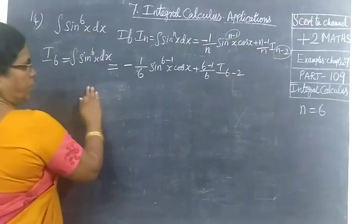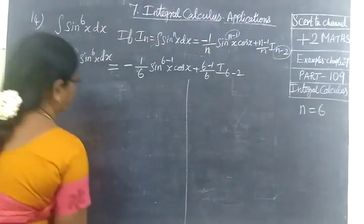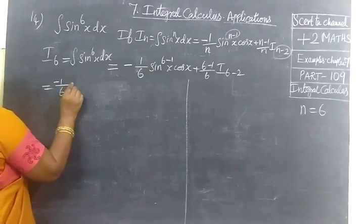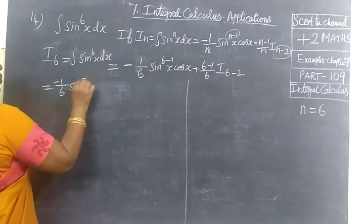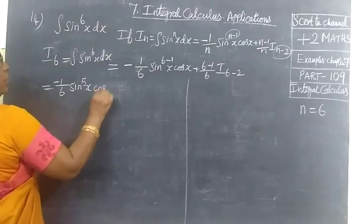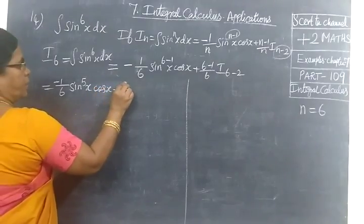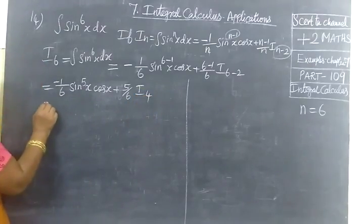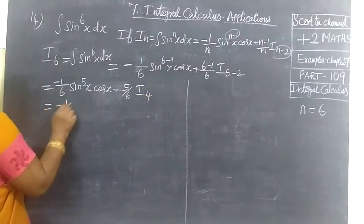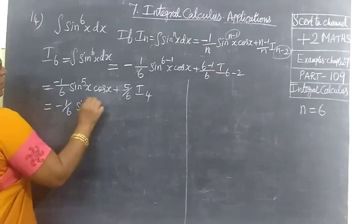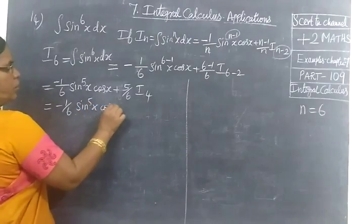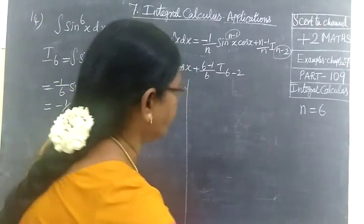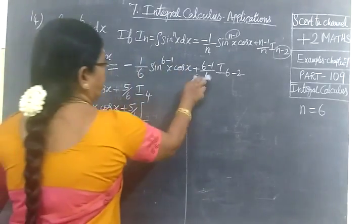So I₆ equals minus 1/6 · sin power 5x · cos x plus 5/6 · I₄. Now for I₄, we apply the reduction formula again, writing the prediction formula with n equal to 4.